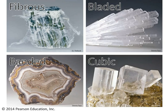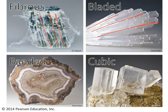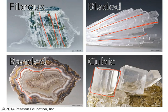Other distinctive habits are listed here. In the upper left, you can see the fibrous mineral habit that's typical of the asbestos minerals. On the right, you can see a bladed mineral habit. In the lower right, you've got a cubic mineral habit, and in the lower left, you've got a banded mineral habit. That's typical of agate.